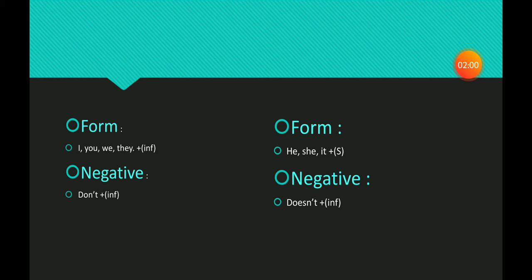Please note: I, we, you, they plus verb infinitive. The negative of the verb infinitive is 'don't' plus infinitive. If I have he, she, or it, put verb with S. So, he, she, it plus verb-S. The negative of verb-S is 'doesn't' plus infinitive.